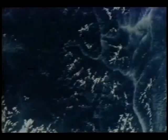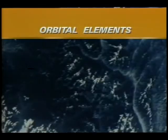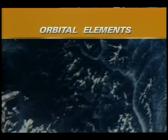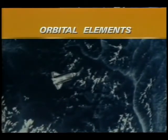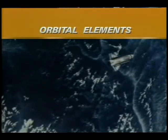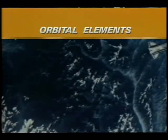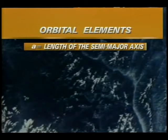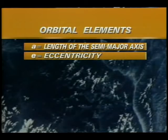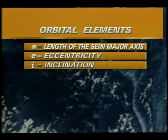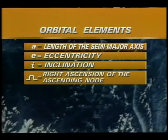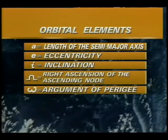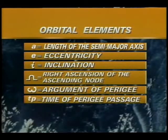There are six numbers called the orbital elements, which specify the size, shape, and orientation of an orbit in space, as well as the location of the spacecraft in the orbit. Based on an orbit which is an ellipse, the six orbital elements are: length of the semi-major axis, eccentricity, inclination, right ascension of the ascending node, argument of perigee, and time of perigee passage.